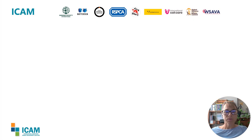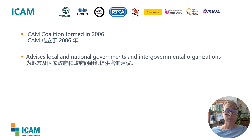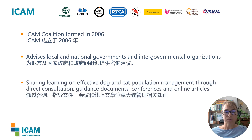I'd like to start with a quick introduction to the International Companion Animal Management Coalition, or ICAM. We are a coalition of international organisations — you'll see their logos at the top of the slide. We were formed in 2006, and each organisation works with governments and NGOs across many countries, as well as intergovernmental organisations such as the WHO, FAO, and the World Organisation for Animal Health. Our purpose is to share learning on effective dog and cat population management through direct consultation, guidance documents, publications, conferences, and online articles.